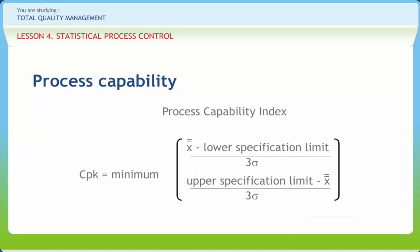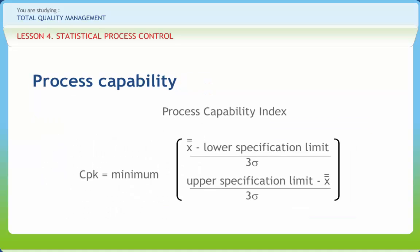The capability of a process is the fraction of output that can be routinely found to be within specifications. Process capability is the range over which the natural variation of a process occurs as determined by the system of common or random causes. That is,